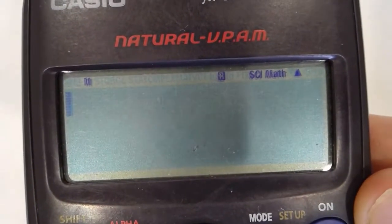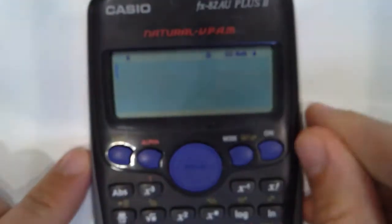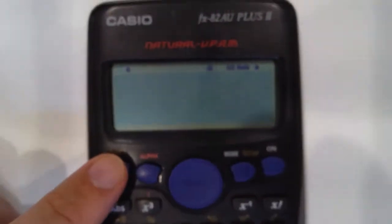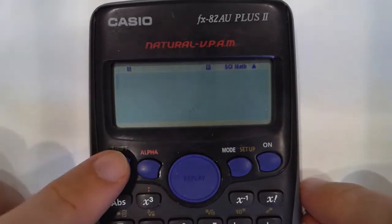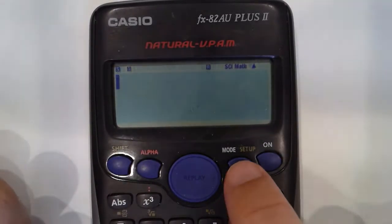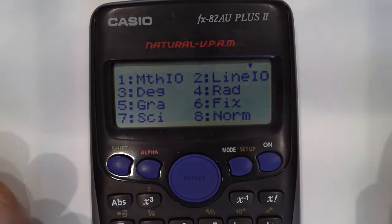You don't want it in radians, you actually want it in degrees. So what you do is if you press, let's focus it again, shift, set up, which is the yellow one here, it will give you this screen.